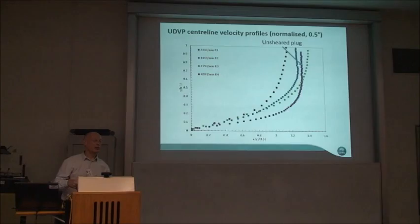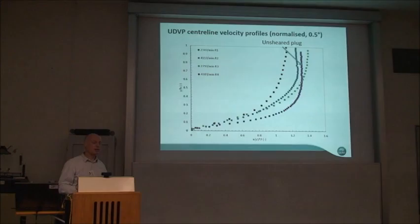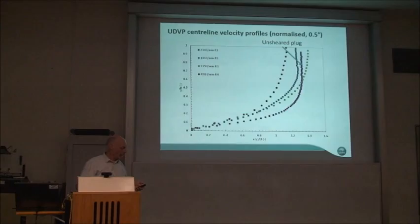This unsheared central plug only exists temporarily or only exists for homogenous fluids without particles. It has also been observed in some channel tests conducted on site at the Jakmata site, where a very large channel rig with real tailings going through noticed an unsheared flowing middle — fitting what they've seen for very viscous material.